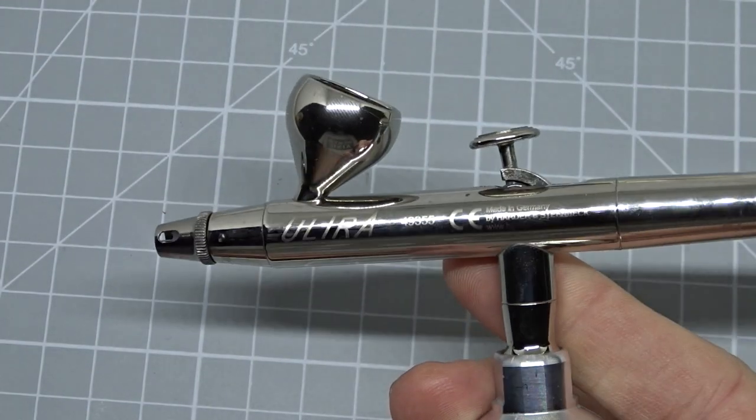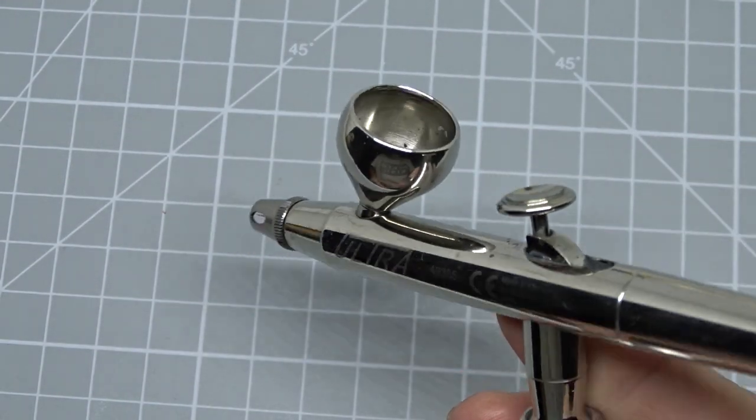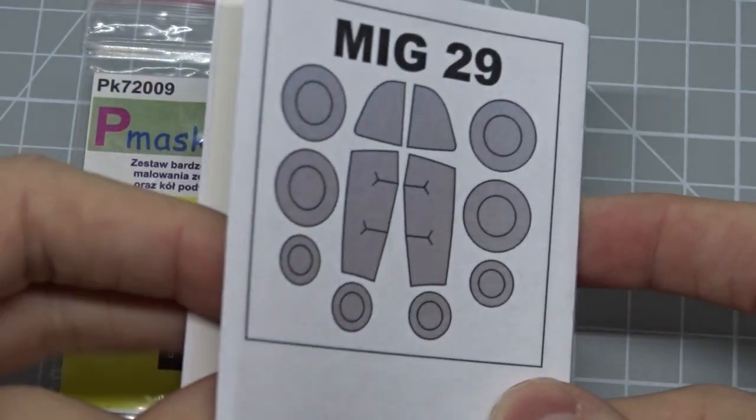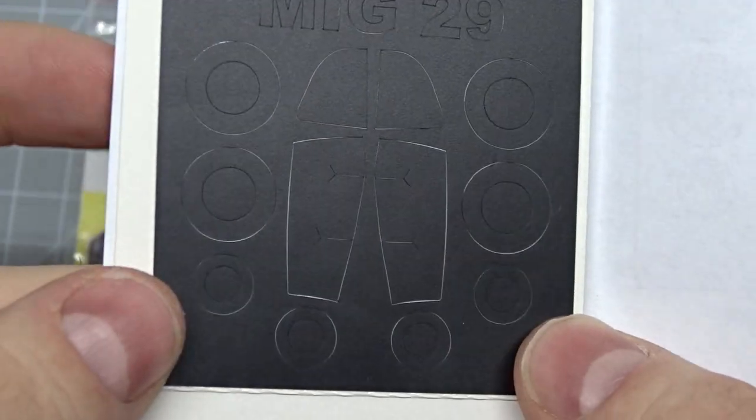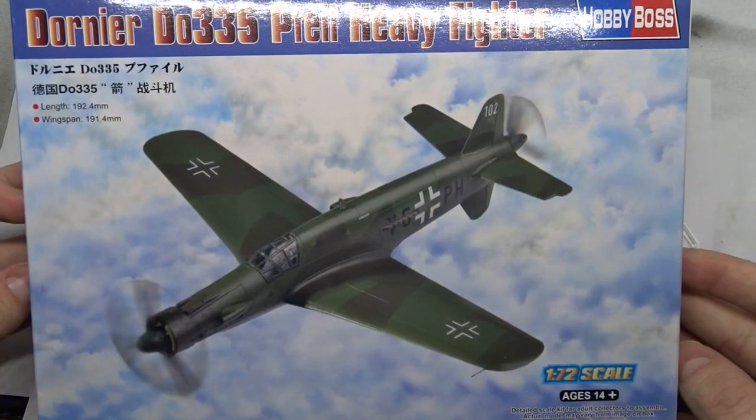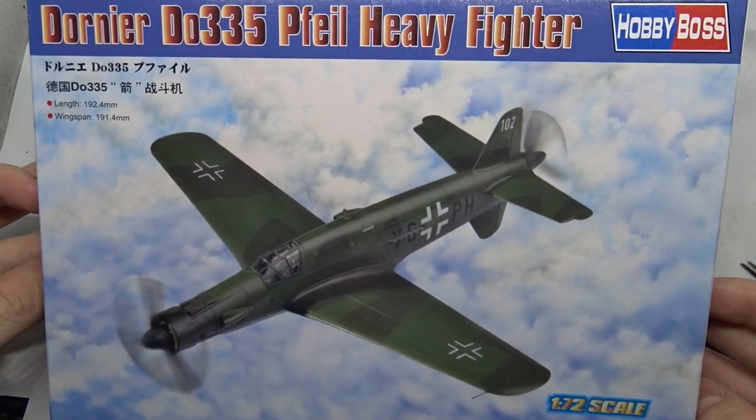Therefore my go-to is airbrushing which means that it's essential to mask the canopy. The easiest option here are pre-cut masks that you can buy separately like I did for my Dornier Dough 335.